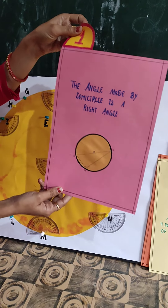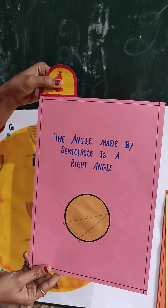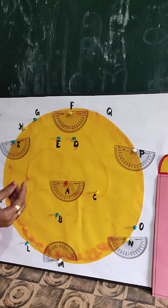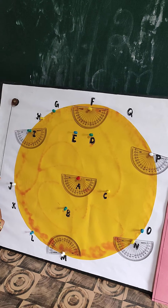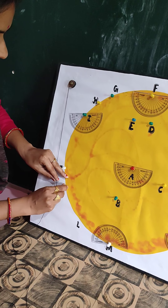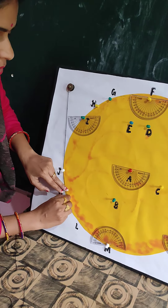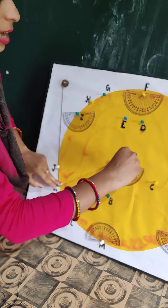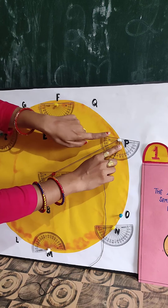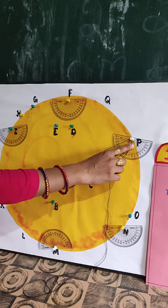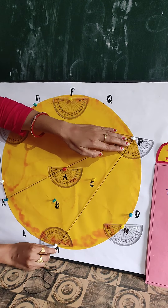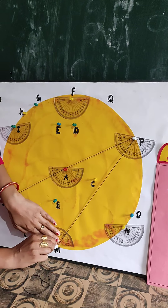The first theorem is: the angle made in a semicircle is a right angle. For this theorem, I am taking first point K. Next point A — A is the center of the circle. Next point P. So K and P form a diameter of the circle. Next point, I am taking M. We can see this triangle KMP lies within a semicircle.